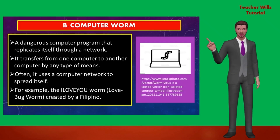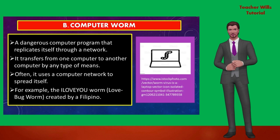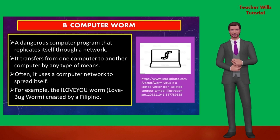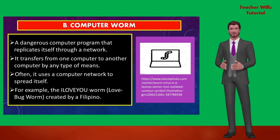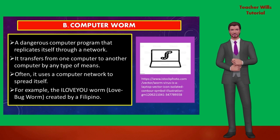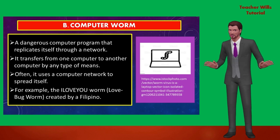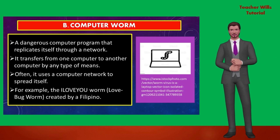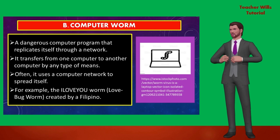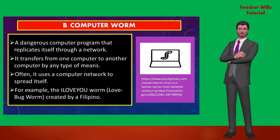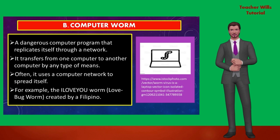The computer worm. The computer worm is a dangerous computer program that replicates itself through a network. It transfers from one computer to another by any type of means. Often, it uses a computer network to spread itself. For example, the I Love You worm or love bug worm, created by a Filipino. Anti-virus, anti-spyware, and use of firewall helps to prevent worm attacks, but it must be updated regularly to ensure current prevention and control.